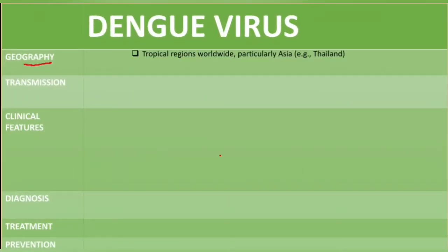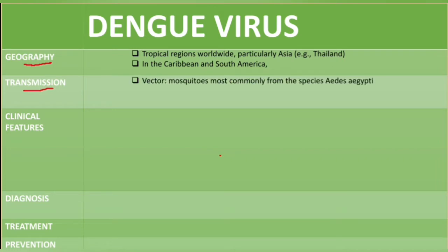Dengue virus is found in tropical regions worldwide, particularly in Asia — with Thailand as an example — and also in the Caribbean and South America. Regarding transmission, the vector is mosquitoes, particularly the species Aedes aegypti. The reservoirs are humans, and there are also some cases of non-vector transmission, for example through sexual intercourse.